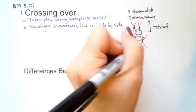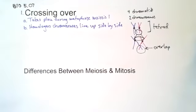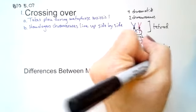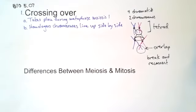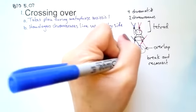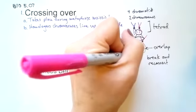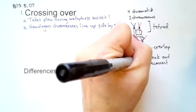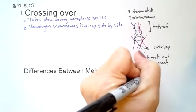So while they're in tetrad, we get here overlap. And where the chromosomes are overlapping, they break off and reconnect. So that when they're done, what I'm going to have is this. So they break off and reconnect, and they swap genetic information.